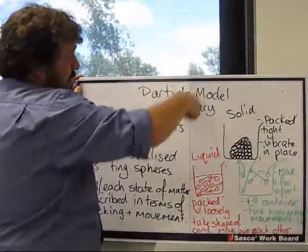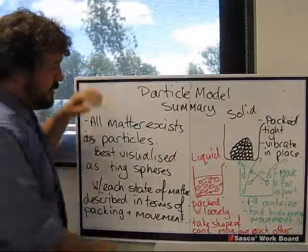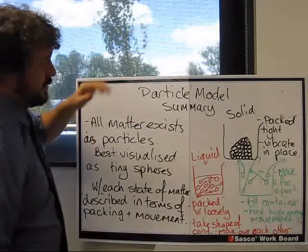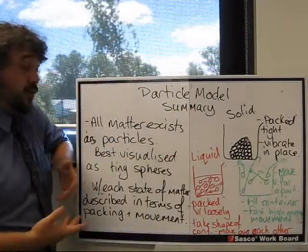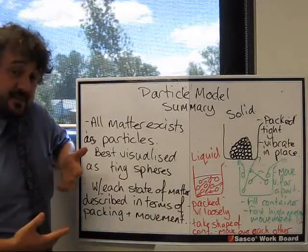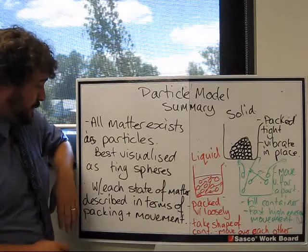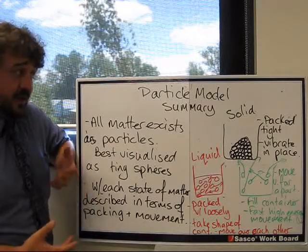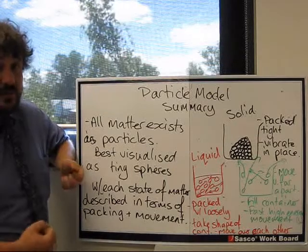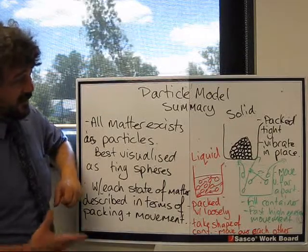Now we're going to do a quick bit of revision on the particle model. Okay, so all matter exists as particles and it's easiest to think of this in forms of little spheres. Each state of matter, we talk about it in terms of packing and movement of particles. You know this.